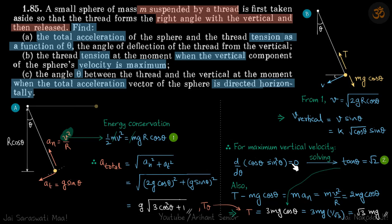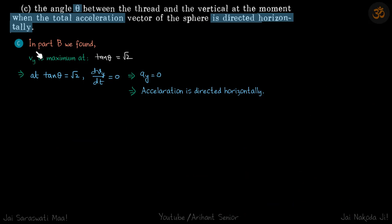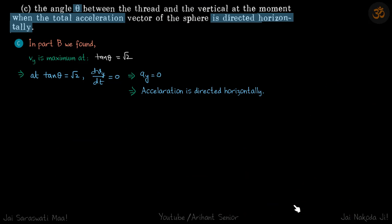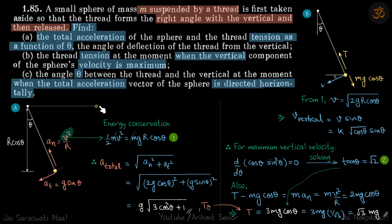In part two we found that vy is maximum at tanθ = √2. At tanθ = √2, we can say that d(vy)/dt = 0. If vy is maximum, its derivative must be zero, which means ay = 0, which implies the acceleration is directed horizontally — and that's exactly what we needed to find. So the answer is the same angle: tanθ = √2.